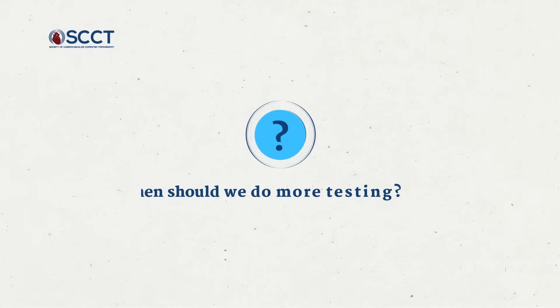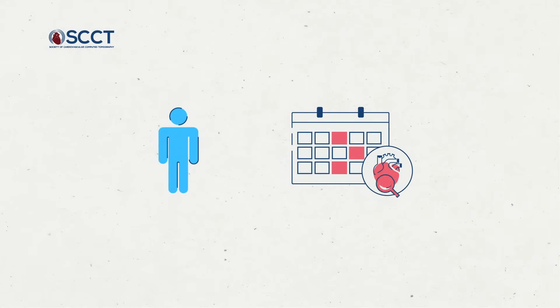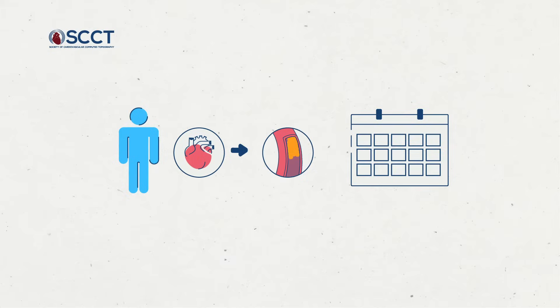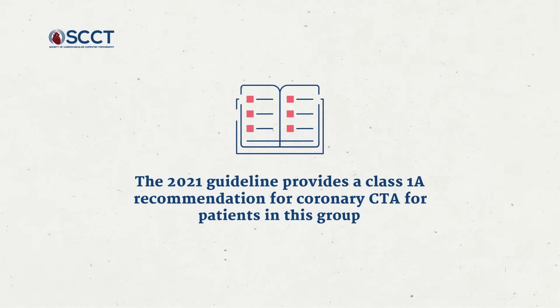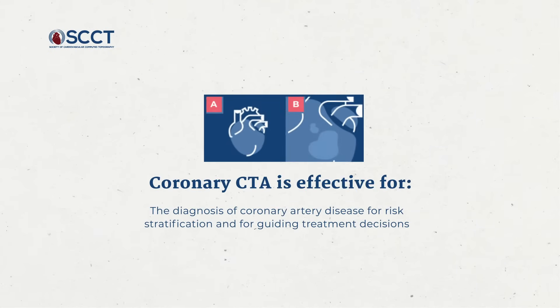When should we do more testing? It is important to remember that additional testing is not always needed. Further testing is most helpful in patients who have an intermediate to high pretest probability of obstructive coronary artery disease. The 2021 guideline provides a class 1A recommendation for coronary CTA for patients in this group who have stable chest pain and no known CAD. Specifically, the guideline states that coronary CTA is effective for the diagnosis of CAD, for risk stratification, and for guiding treatment decisions.